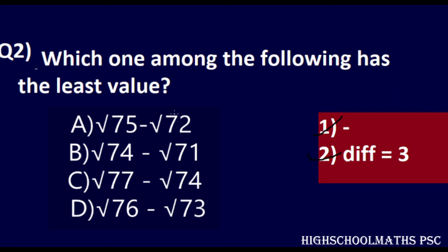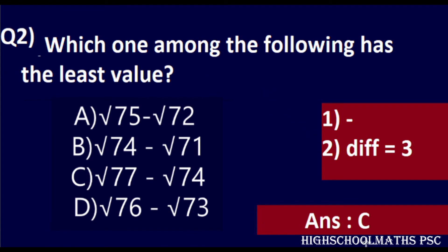If we can satisfy these two conditions — the operation and the difference — we can answer the question. The least value has the highest first number. Looking at the options, 74 in option B (√74 − √71) gives us the highest first number. We check the standard condition, and the standard condition is satisfied. The highest value in the first number is option B: √74 − √71.